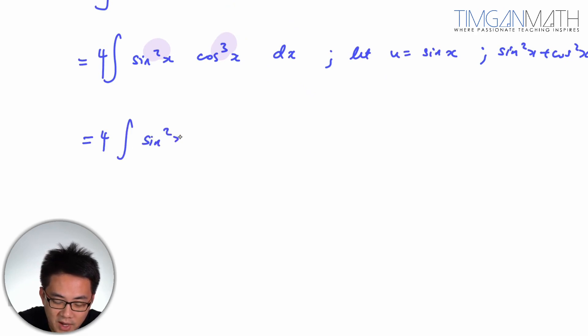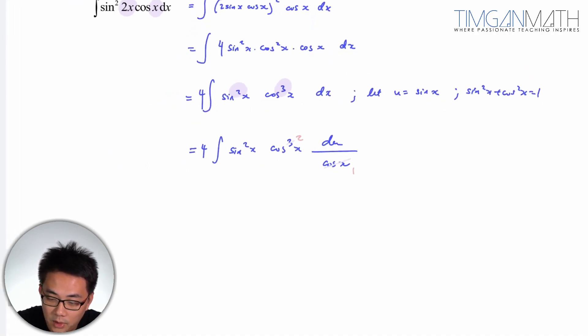So sine square x cosine cube x. So du, this will just divide sine, this will be cosine x, right? Cosine x. So once this is done, cancel it out. Obviously you need to reduce everything to u, right?